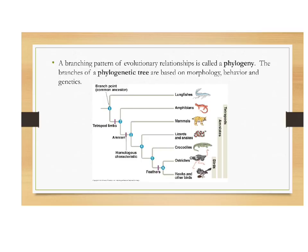The branching pattern of evolutionary relationships is called a phylogeny. Those of you who have taken AP Bio are familiar with phylogenetic trees, which are based on morphology, behavior, and genetics. On this tree, time goes from left to right — ancient time on the left, modern on the right. Our starting point is a common ancestor to everything on the tree. At branch point one, the lungfishes evolved — they're ancient fishes with rudimentary lungs. The defining characteristic at that branch point was tetrapod limbs, which lungfishes did not evolve.